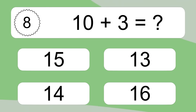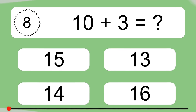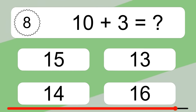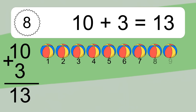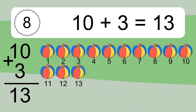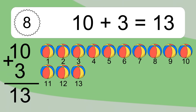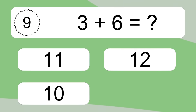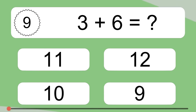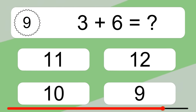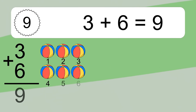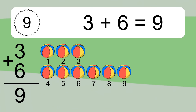10 plus 3 equals what? 10 plus 3 equals 13. Let's count it. 1, 2, 3, 4, 5, 6, 7, 8, 9, 10, 11, 12, 13. 3 plus 6 equals 9. Let's count it. 1, 2, 3, 4, 5, 6, 7, 8, 9.